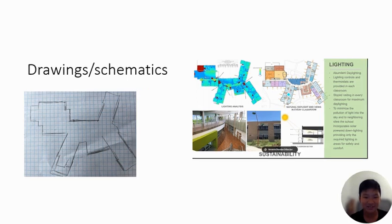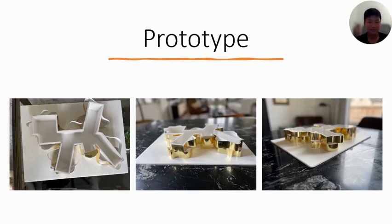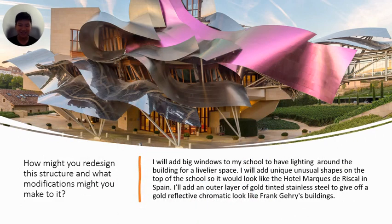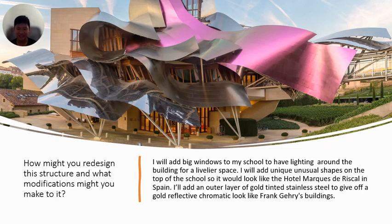Drawings and Schematics — Prototype. How might I redesign and add modifications to my school? I will add big windows to have lighting around the building for a livelier space. I'll add unusual unique shapes on top of and on the sides of the school so it looks like the Hotel Marqués de Riscal in Spain. I'll also add an outer layer of gold-tinted stainless steel to give off a gold reflective, chromatic look like Frank Gehry's buildings.